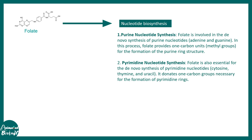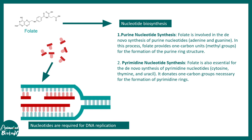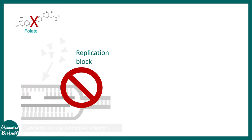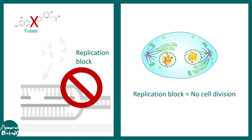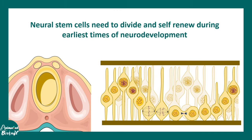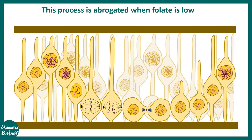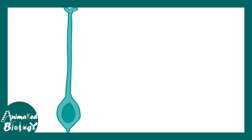Both purine and pyrimidine synthesis require folate. When folate is needed for nucleotide biosynthesis and nucleotides are required for DNA replication — which is absolutely essential for a dividing cell — folate deficiency abrogates nucleotide biosynthesis and DNA replication, which is detrimental for dividing cells. When the brain is developing, the cells are stem cells — neuronal stem cells that are precursors for neurons. They need to divide rapidly to self-renew and give rise to neurons, a process known as neurogenesis, which is abrogated when folate is deficient.